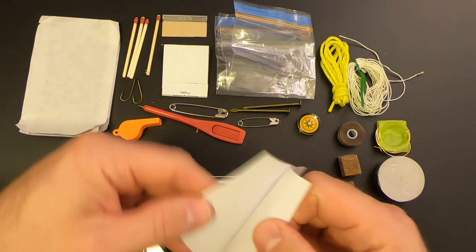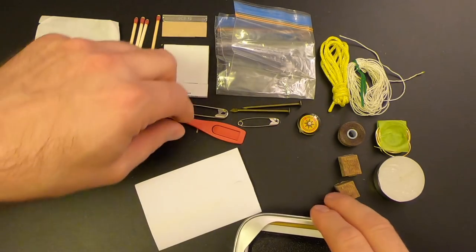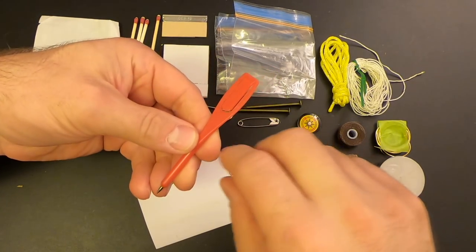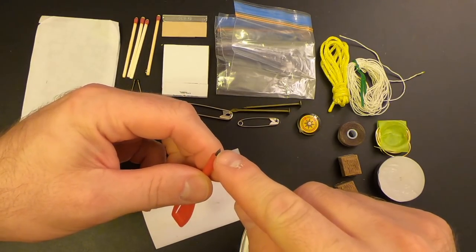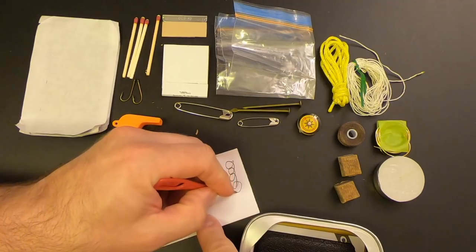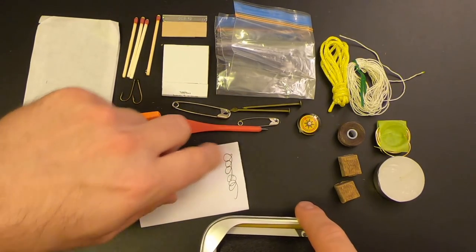Then we've got some paper. Makes sense that if you have a pen or a pencil, you should have some paper. Let's see if the pen works. Yeah. Works just fine. Actually, this is not a pen. It's a little pencil. That's a lead. I thought it was a little ballpoint pen, but it's actually a pencil. That's even better. Because a pen can always dry up or run out of ink.